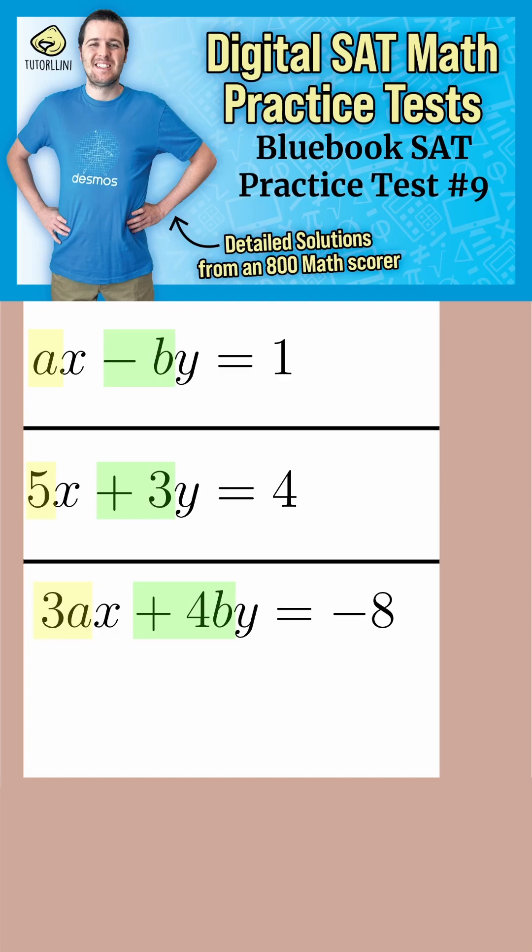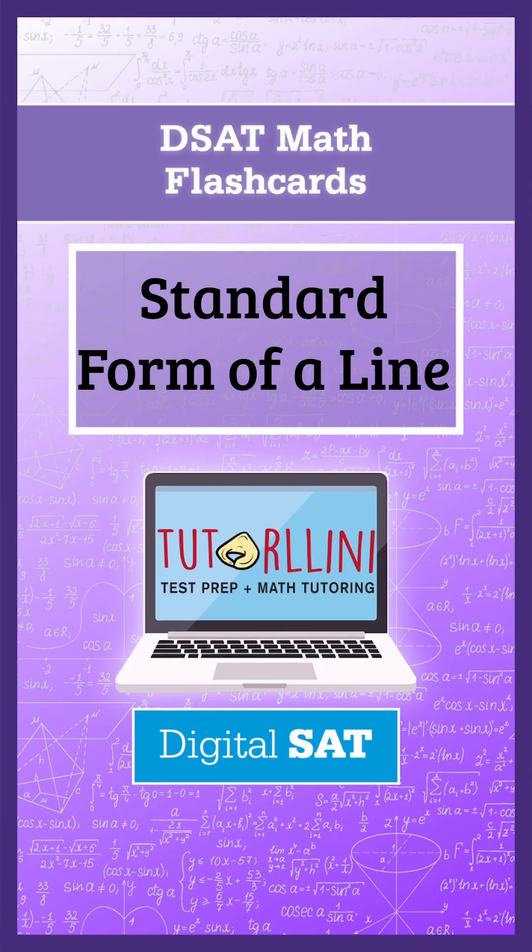Don't forget, the slope is equal to negative capital A over capital B. Pause this video and see if you can remember this important DSET Math concept.